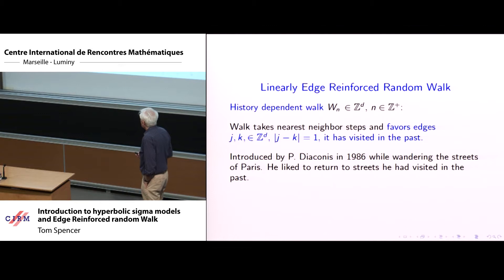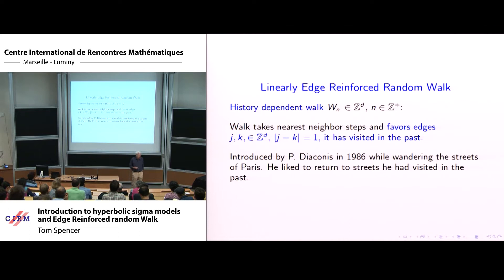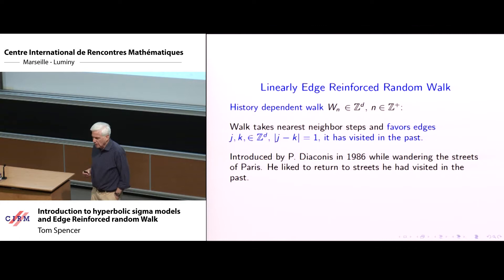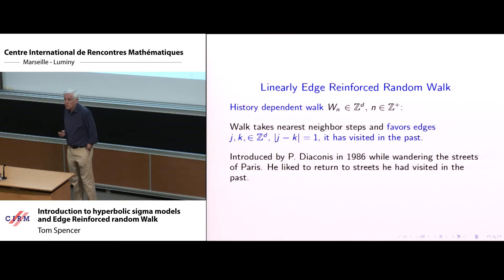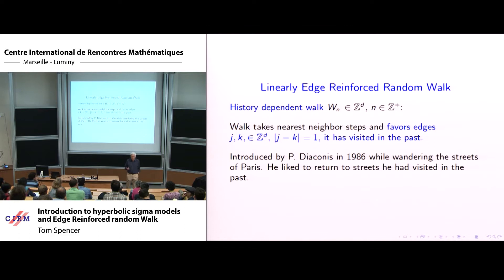It was introduced by Percy Diaconis around 1986 while he was wandering the streets of Paris. I talked to Percy — this is what he really told me, and Silke has said the same thing. He'd like to return to streets that he had visited in the past, and so he made up this model. When I first learned about this model, I first learned about it from Gotti when he was visiting the Institute for Advanced Study. I thought it was a kind of interesting model but a little bit unusual. But it is really quite a nice model, and we'll see some connections to quantum mechanics and sigma models in a little bit.